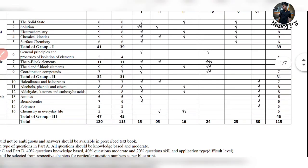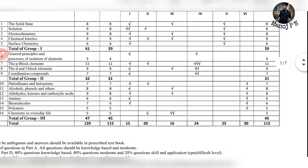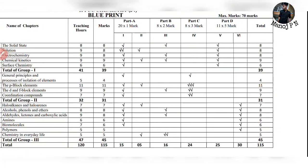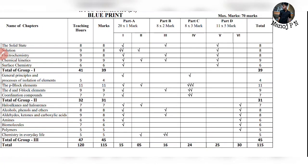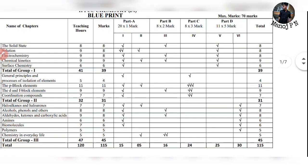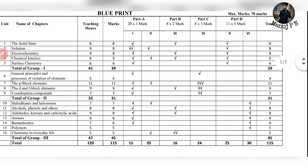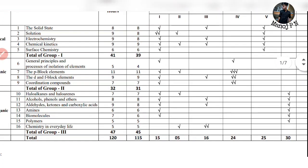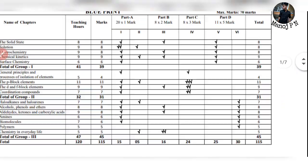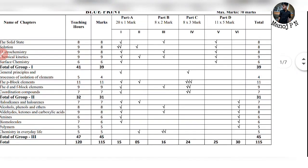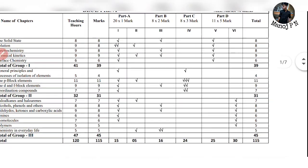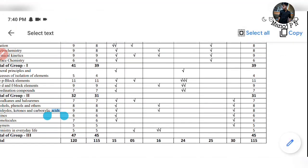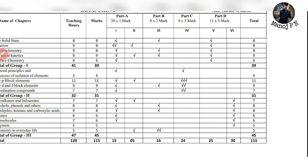D and F-block is 9 marks — 1 mark to MCQ, and then Part B is 2 marks to 1 question, Part C is 3 marks to 1 question, and Part C is 4 marks — total 9 marks. Next part is coordination components for 7 marks — 1 mark to 1 question that is MCQ, and then 3 marks to 2 questions, that is 3 and 3 marks each, and then total marks to 7 marks.